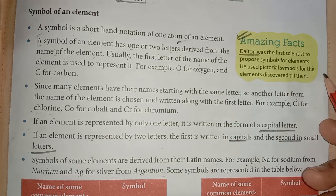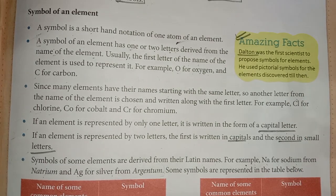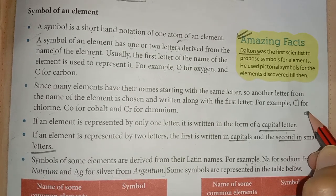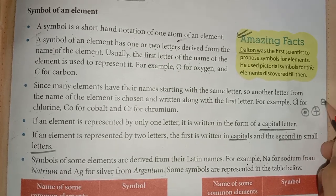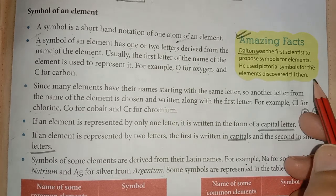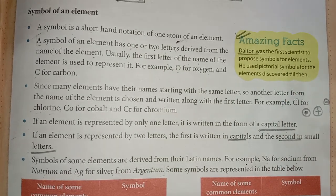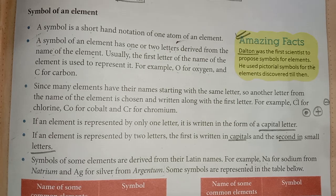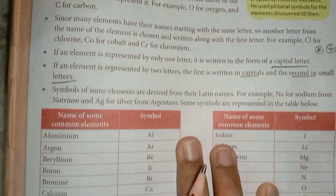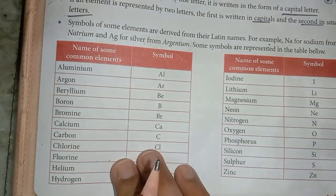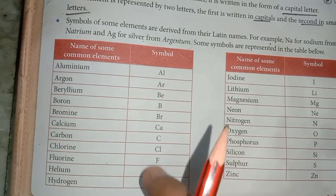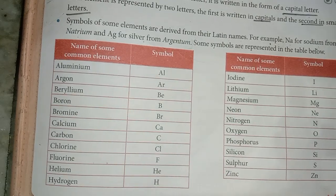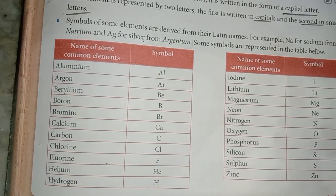Early scientists used pictorial symbols for elements. Over time, as more elements were discovered, new symbols were given. There is a table of common element names and symbols. To learn them, spend 10 minutes daily and you will memorize them.